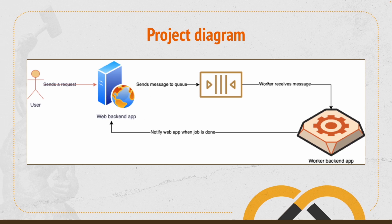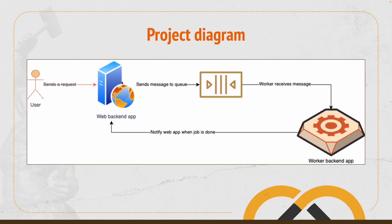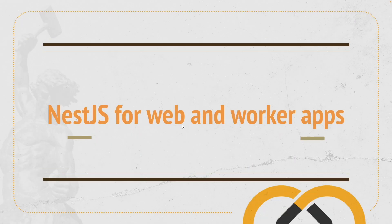This is how we can communicate a web backend app and a worker backend app asynchronously. In my case it was just two seconds, but this machine can run for many minutes or even hours. This is how we communicate services that can take a long time to run. You just learned how to communicate a synchronous backend app and an asynchronous backend app using a message queue in the middle. If you have any doubts or would like to see me talk about another topic related to software engineering or NestJS, just leave me a comment down below. I hope you liked it and I'll see you next time.